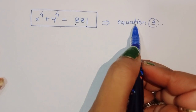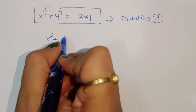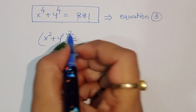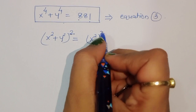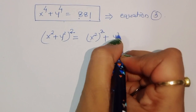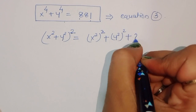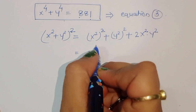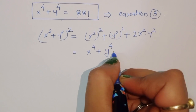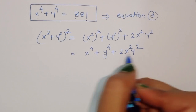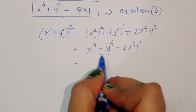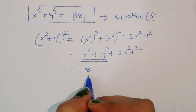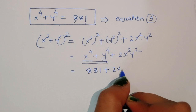Now we use the identity x squared plus y squared whole square equals a squared plus b squared plus 2ab, which gives x to the power 4 plus y to the power 4 plus 2 x squared y squared. We know x to the power 4 plus y to the power 4 equals 881 by equation three, so we substitute that value: 881 plus 2 x squared y squared.